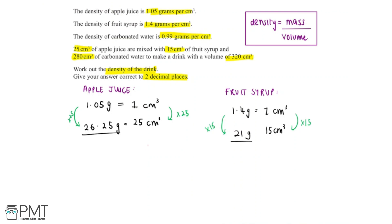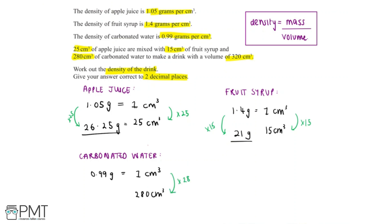Finally, we find the mass of carbonated water in the drink. Since the density of carbonated water is 0.99 grams per centimetre cubed, we know that for every 0.99 grams of carbonated water it has a volume of 1 centimetre cubed. The drink contains 280 centimetre cubed of carbonated water, so we multiply both sides by 280. 0.99 multiplied by 280 gives 277.2 grams of carbonated water.